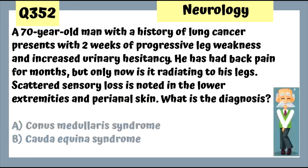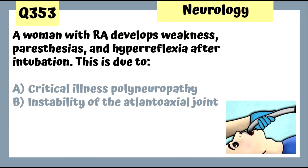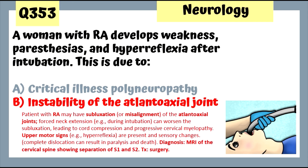Question 352: A 70-year-old man with a history of lung cancer presents with leg weakness and increased urinary hesitancy; back pain for several months — cauda equina syndrome is more associated with the urinary symptoms. Question 353: A woman with RA develops weakness, paresthesias, and hyperreflexia after intubation — this is due to instability of the atlantoaxial joint seen in rheumatoid arthritis, especially during intubation. Get MRI; treatment is surgery.